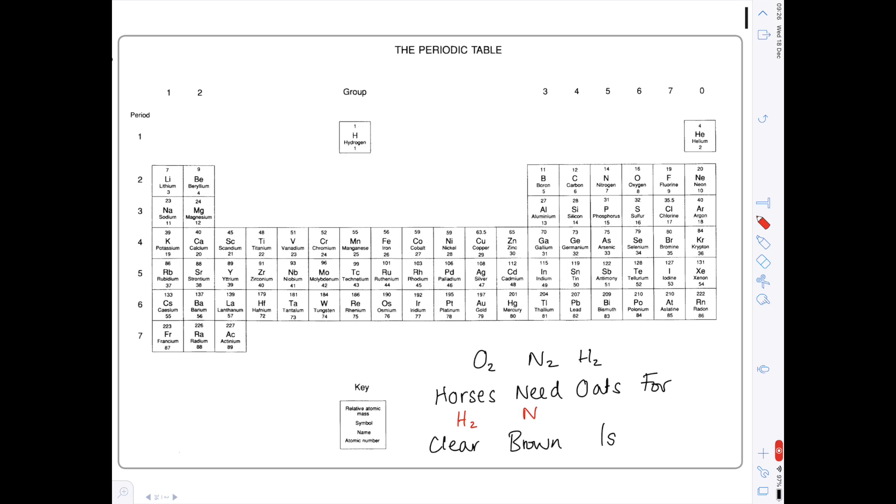So what elements do these represent? Well, horses is hydrogen, need is nitrogen, oats is oxygen, for is fluorine, clear is chlorine, brown is bromine, eyes is iodine.